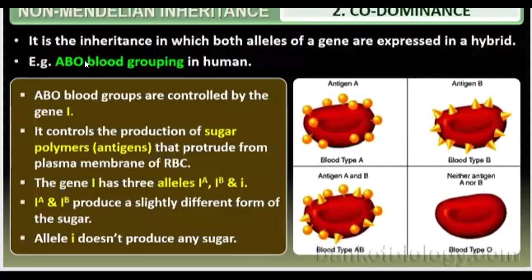Example: ABO blood grouping in human beings. If you have a question about what is ABO blood grouping, you can write all these points and you will be able to gain full marks. In the presentation, you can see more graphically and pictorially. In exam time, you have to represent pictorially and write in it.